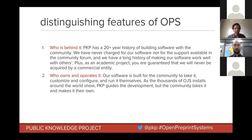The second distinguishing feature is who owns and operates it. Our software is really built for the community to take, configure, customize, and run themselves — it's in the hands of that community. The thousands of journals on that global map shows that even though PKP guides the development, the community takes it and makes it their own. The software is being operated on their servers, controlled by them with their settings. We're not trying to have a hand in that part of it — it's the community's software to own and operate.